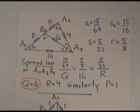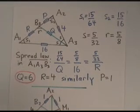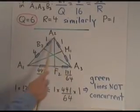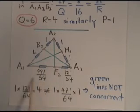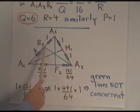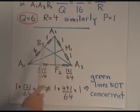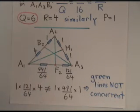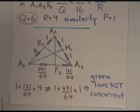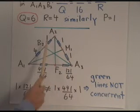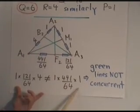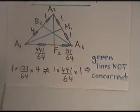So putting everything together, we've now found this information about these three lines. The median splits this side in quadrants 1 and 1. The altitude created quadrants 4, 4, 1 over 64, and 121 over 64, while these two quadrants are 4 and 1. So I asked, are these three lines actually concurrent? Well, if they are, then this quadrants times this quadrants times this quadrants has to be equal to the product of this quadrants times this quadrants times this quadrants. And are they equal? No, they're not. They're almost equal, but they're not. And so the green lines are not concurrent.